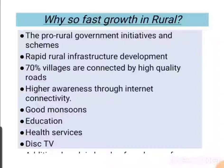The first reason is pro-rural government initiatives and schemes such as Pradhan Mantri Sadak Yojana for roads and transportation, communication schemes, women entrepreneur startup initiatives, and free education schemes. These basic infrastructure facilities set up by government initiatives are a major reason why rural areas are developing rapidly. The second reason is rapid rural infrastructure development — 70% of villages are now connected by high-quality roads.